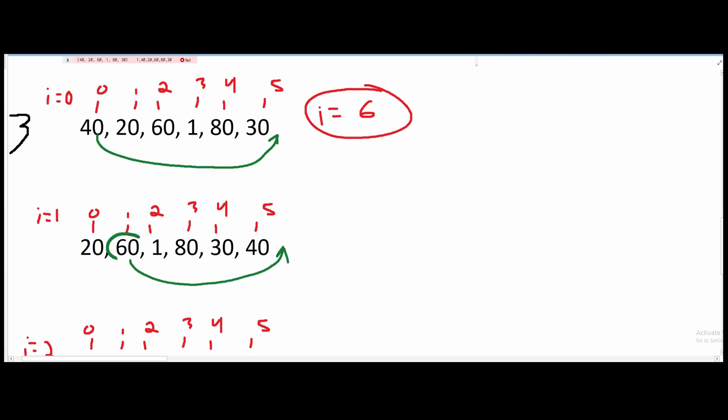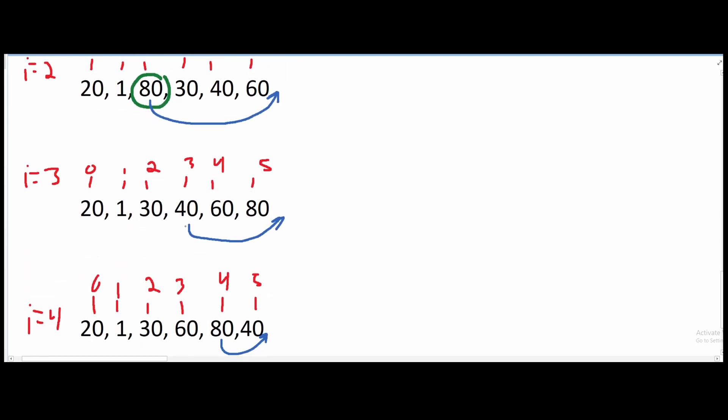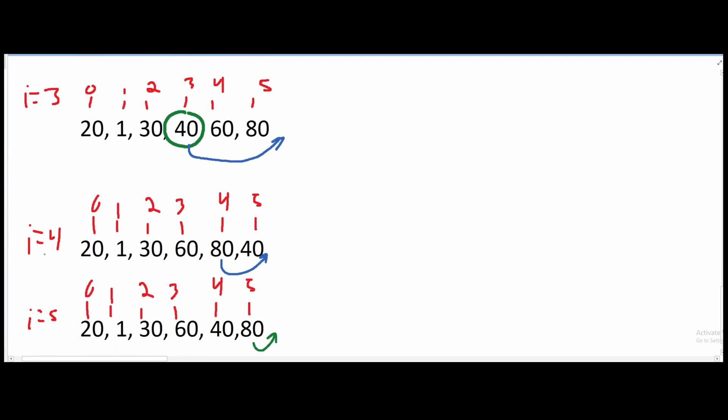Now we're looking at index 1. Index 1 is 60, which is even. So it gets pushed to the back. We're looking at index 2. It's even, it's 80. So it gets pushed to the back. Index 3 is 40, which is even. So it gets pushed to the back. Index 4 is 80 again. So that gets pushed to the back.